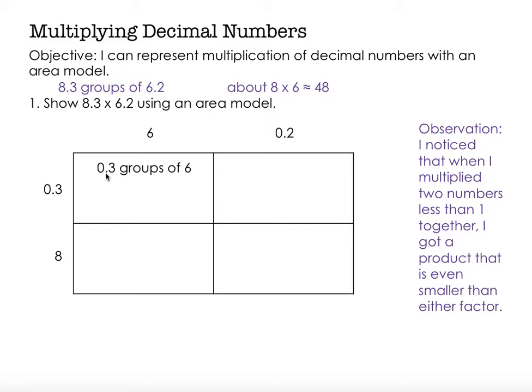but it's a number less than 1. I want a group that's smaller than 1 of 6. So my product has to be less than 6. Well, I know that 3 times 6 is 18, but 18 does not make sense as my product. But 1 and 8 tenths would make sense.